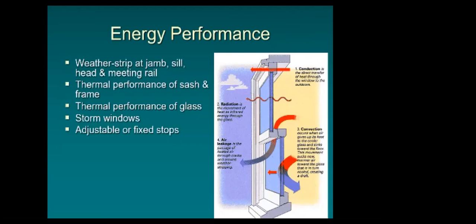There are two real energy performance issues: air infiltration around joints at the head, jamb, meeting rail, and sill — which weather stripping addresses — and cold conducting through the glass itself. A storm window, especially a good quality one, is going to resolve a lot of both issues.